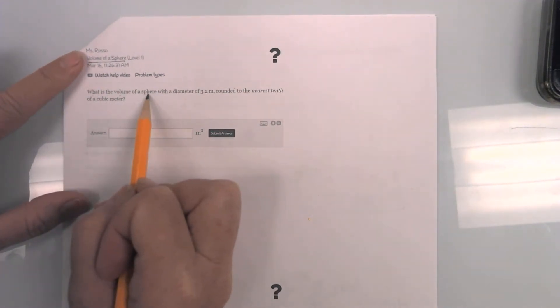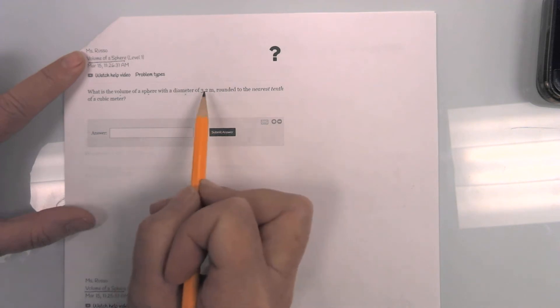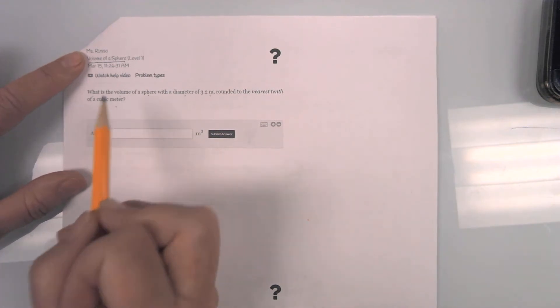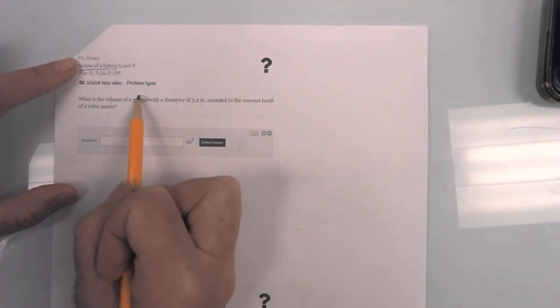So here we go. What is the volume of a sphere with a diameter of 3.2 meters rounded to the nearest tenth of a cubic meter? Okay, so first of all, volume of a sphere.